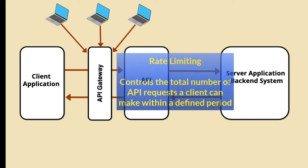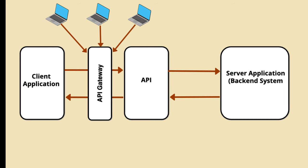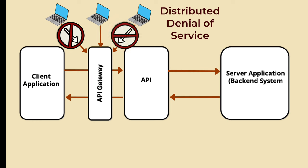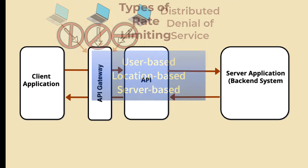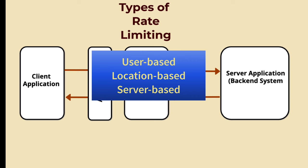Rate limiting helps ensure the stability and performance of the API, preventing it from being overwhelmed by too many requests at once. When a client makes a request, the API checks if the request falls within the allowed limits. If it does, the request is processed; if it exceeds the limit, the API rejects the request and returns an error message. There are several methods to implement rate limiting: user-based limits, where limits are set based on individual users identified by API keys or IP addresses; location-based limits, applied based on geographic locations to ensure fair distribution of resources; and server-based limits, set on the server side to manage CPU and memory, with requests routed to another server or denied if all servers are at capacity.